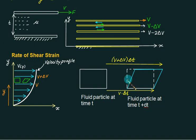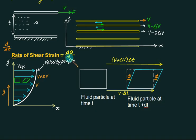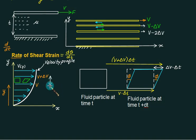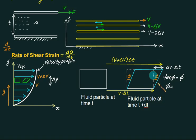This angle phi is called the shear strain. The relative displacement between the two surfaces is delta V multiplied by delta t. The vertical distance between the two layers is dy. Since the angle is very small, tan phi equals phi. So we can write phi equals delta V divided by delta y — the shear strain angle.